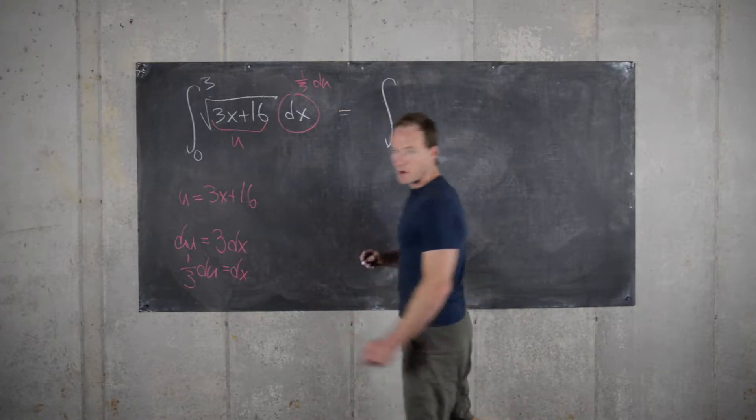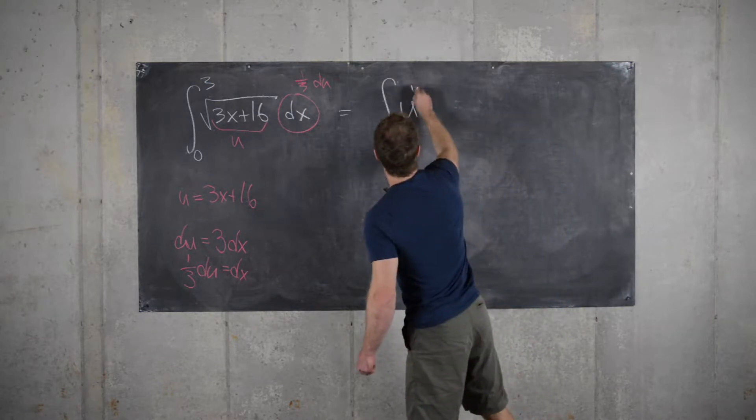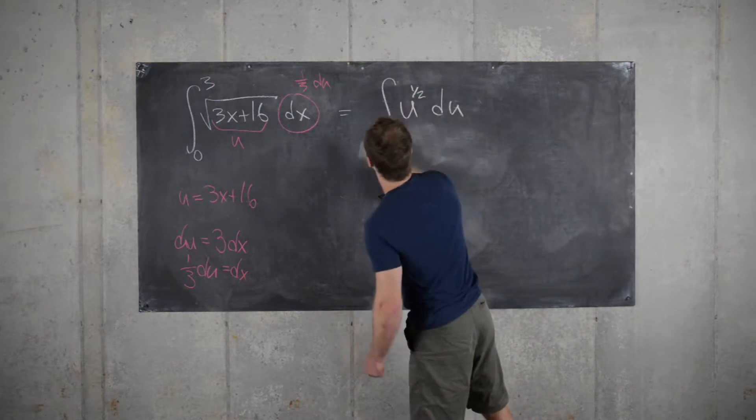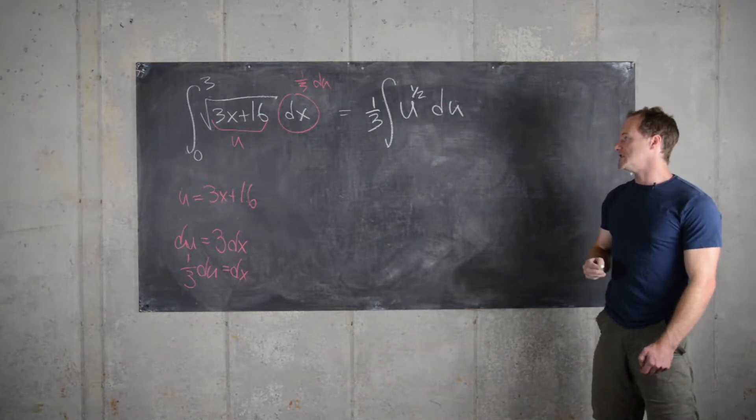That allows us to rewrite this integral as the integral of the square root of u, which we'll just go ahead and rewrite as u to the one-half du. We'll bring this one-third outside that came from the du.